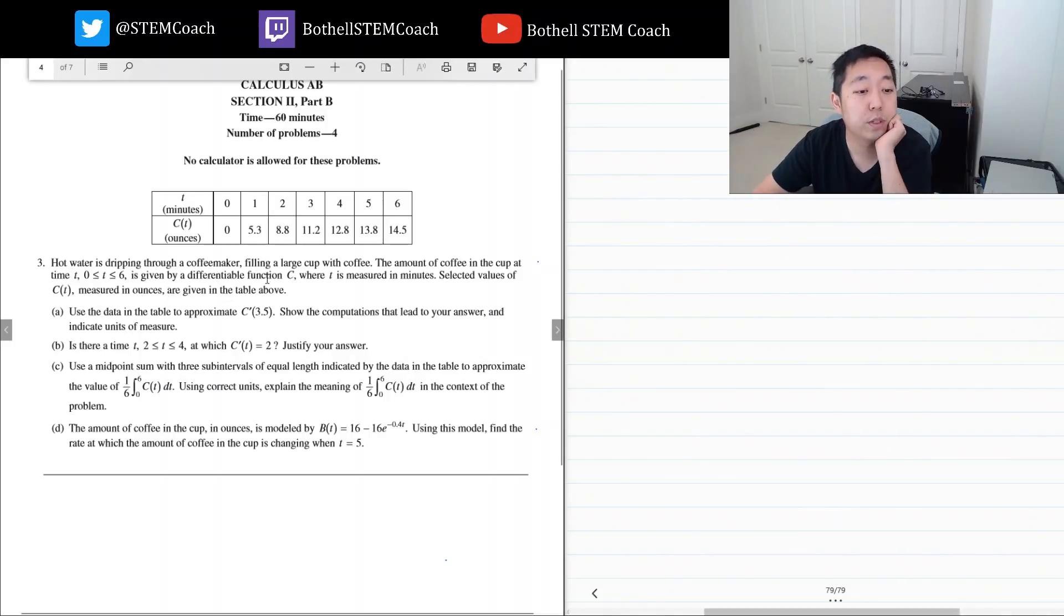We're at number three, so we're on the non-calculator portion. Hot water is dripping through a coffee maker, filling a large cup of coffee. The amount of coffee in the cup at time t equals zero is given where t is measured in minutes. Selected values of c of t measured in ounces are given in the table above.